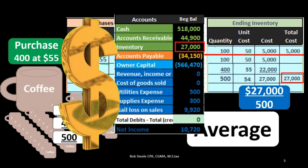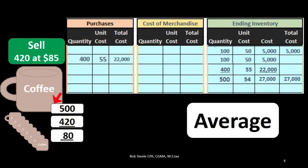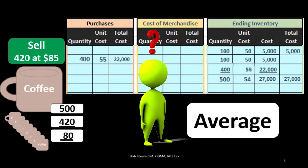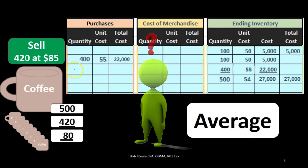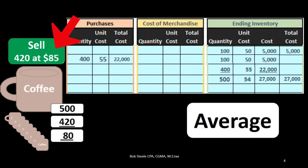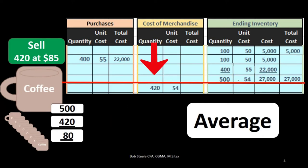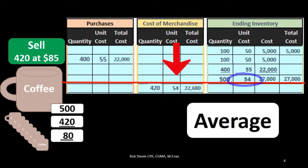That $27,000 worth is what would be recorded on the trial balance and on the balance sheet — the dollar amount, not the units, being represented on the financial statements. When we then sell some units, the question is: what's the cost of those units? Not the sales price, but the cost. The sales price has nothing to do with the cost necessarily. The cost here was $50 or $55, and the average was $54. Therefore, if we're going to sell 420 units, we say they cost $54 because that's the average.